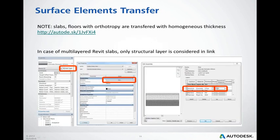Two additional remarks: first, slab floors with orthotropy are transferred with homogeneous thickness — a video example is available under the link on this slide. Second, in the case of multi-layered slabs or floors in Revit, only the structural layer is considered in the link.